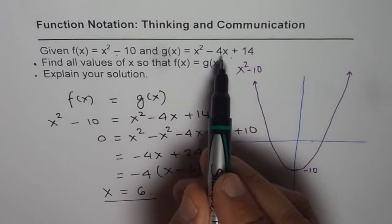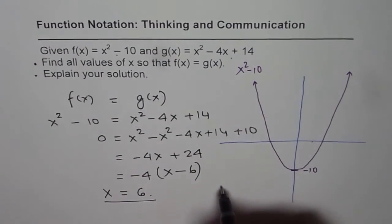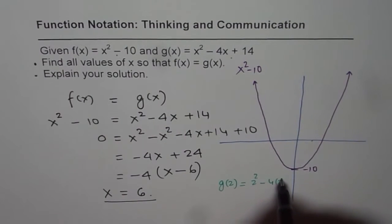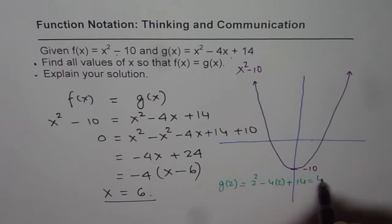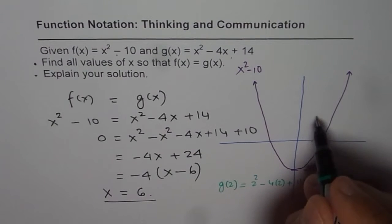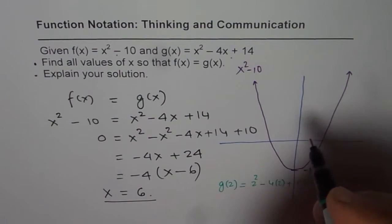If I plug in 2, what do I get? Let me write here first. g of 2 equals 2 square minus 4 times 2 plus 14, which is 4 minus 8 plus 14. That is 10.